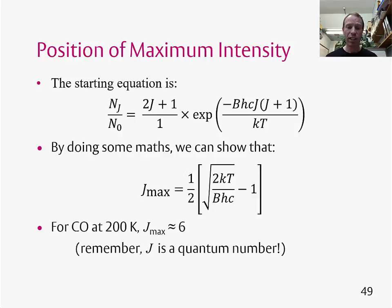And we can put some numbers in. So if you just take a molecule, so for example CO, and we take temperature at 200 Kelvin, we plug numbers in and we get Jmax is approximately equal to six. Jmax has to be an integer because it's a quantum number, so it doesn't make sense for it not to be a quantum number.